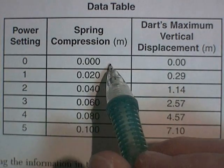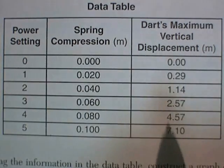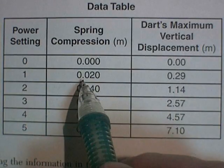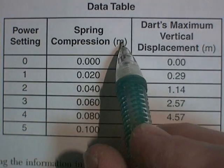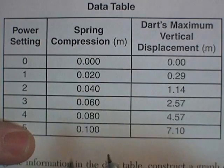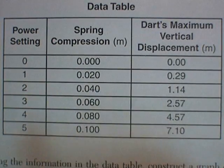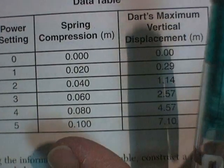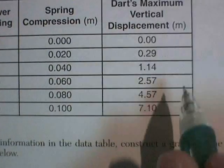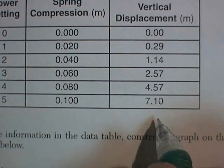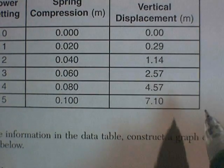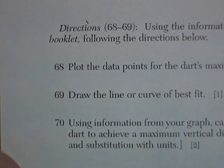Power setting of zero. Sure enough, zero and zero just as advertised. And then you go to one. It's 0.02 meters. So that's about two centimeters. And then you go to four centimeters and six and eight and ten centimeters. So ten centimeters is about a good distance. And the dart's going to go up to seven meters in the air, which is really ripping. That's a good size launch. So let's see what they want us to do.